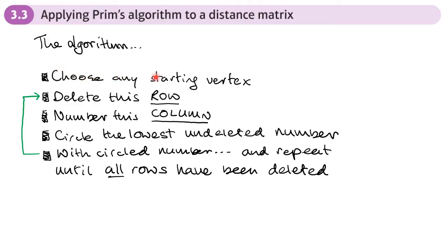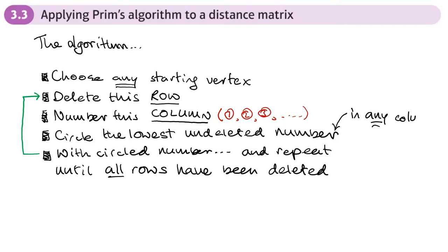When using Prim's algorithm on a network we start at any vertex. After choosing a starting vertex — say vertex A — we delete that row and number the column as one, then two, three, and so on. In that column we circle the lowest undeleted number. In any subsequent column we look at all numbered columns to find the lowest undeleted number, just like in Prim's algorithm on a network.